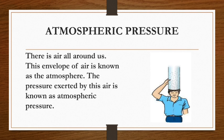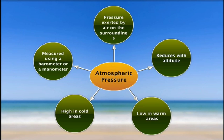Atmospheric pressure. There is air all around us — this envelope of air is known as the atmosphere. The pressure exerted by the air is known as atmospheric pressure. Atmospheric pressure reduces with altitude, is lower in warm areas, higher in cold areas, and is measured using a barometer or a manometer.